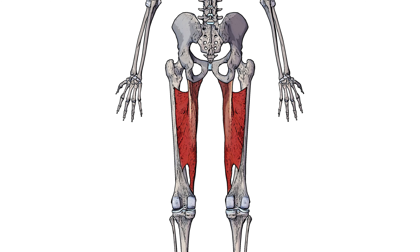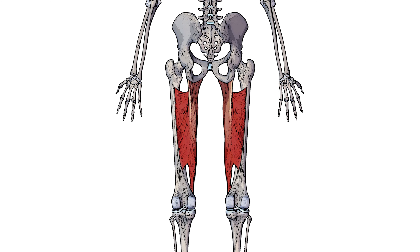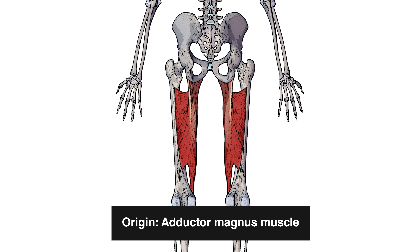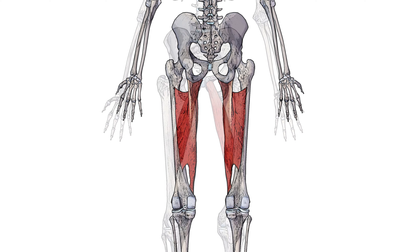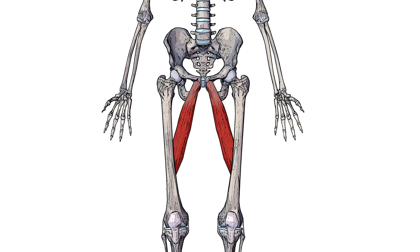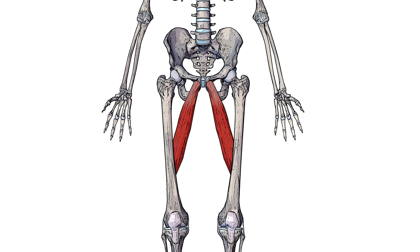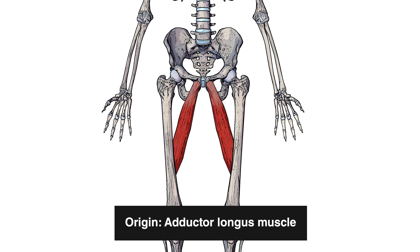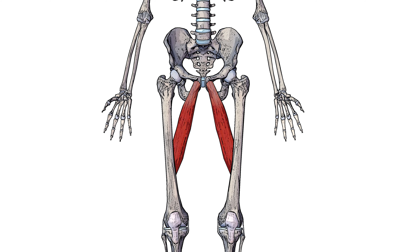As well as originating from the femur itself, it's also going to originate from two of the adductor muscles. The first is the adductor magnus muscle, and the second is the adductor longus muscle. If you want to see the anatomy videos for either of those, I'll put some links in the description and you can check them out after.